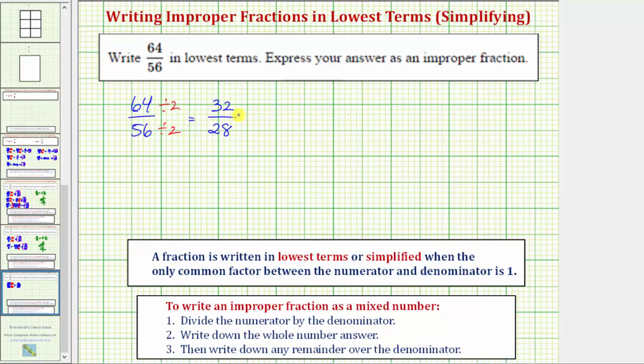Now we recognize that 32 and 28 share a common factor of 4, so let's divide the numerator and denominator by 4. 32 divided by 4 equals 8, and 28 divided by 4 equals 7. Notice now the only common factor between 8 and 7 is 1, and therefore we have the fraction in lowest terms where the fraction is now simplified.